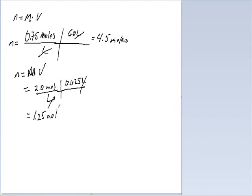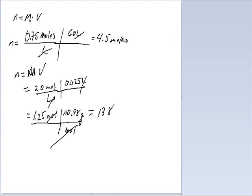But the question asks for grams of calcium chloride, so we have to convert using the molar mass. We take 1.25 moles and multiply by the molar mass of calcium chloride, which is 110.98 grams per mole. We cancel the moles, and our final answer is 138.7 grams of calcium chloride.